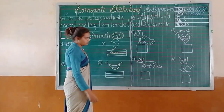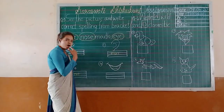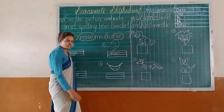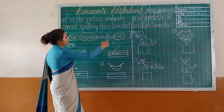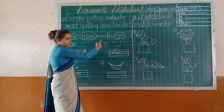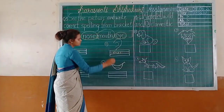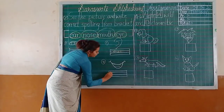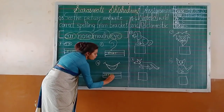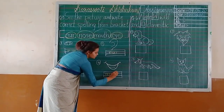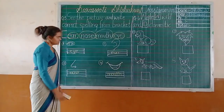Nose. Next, the fourth one — which body part is it? Mouth. From the mouth you can eat. So which spelling of 'mouth' have you found? Circle it and write it: M-O-U-T-H. Mouth.